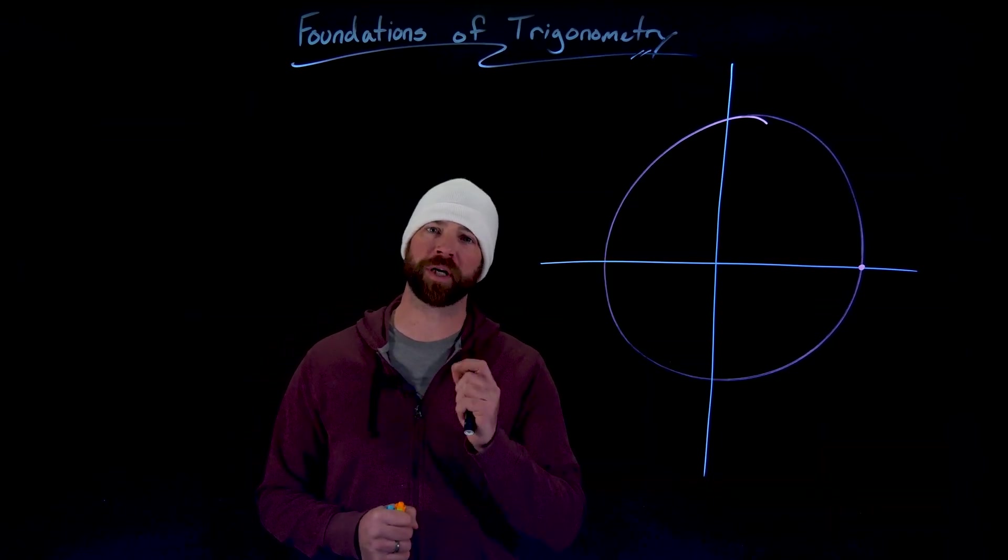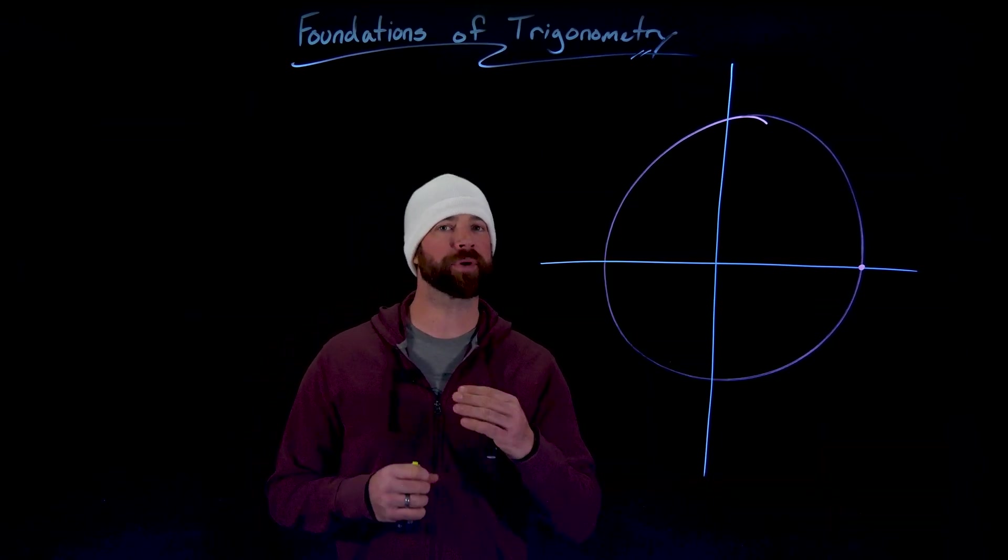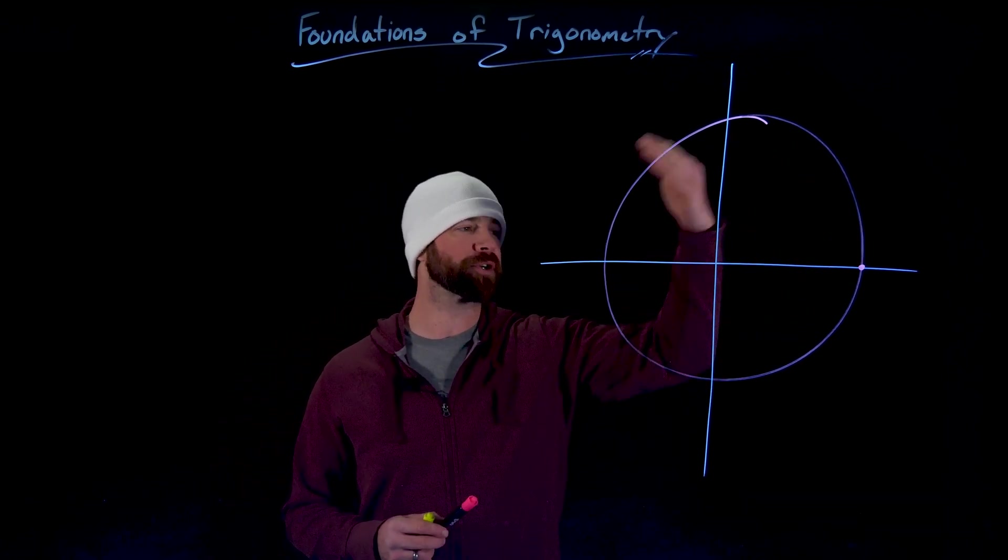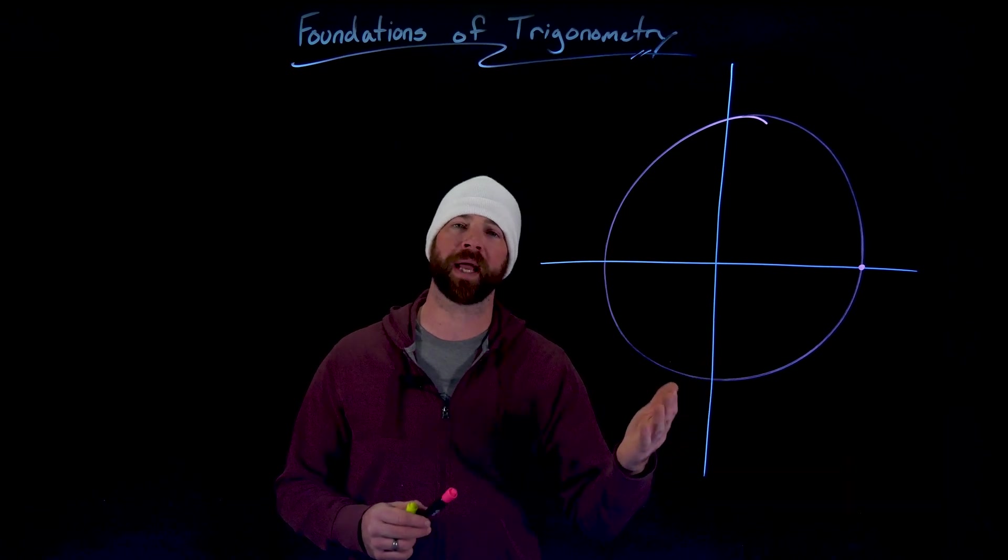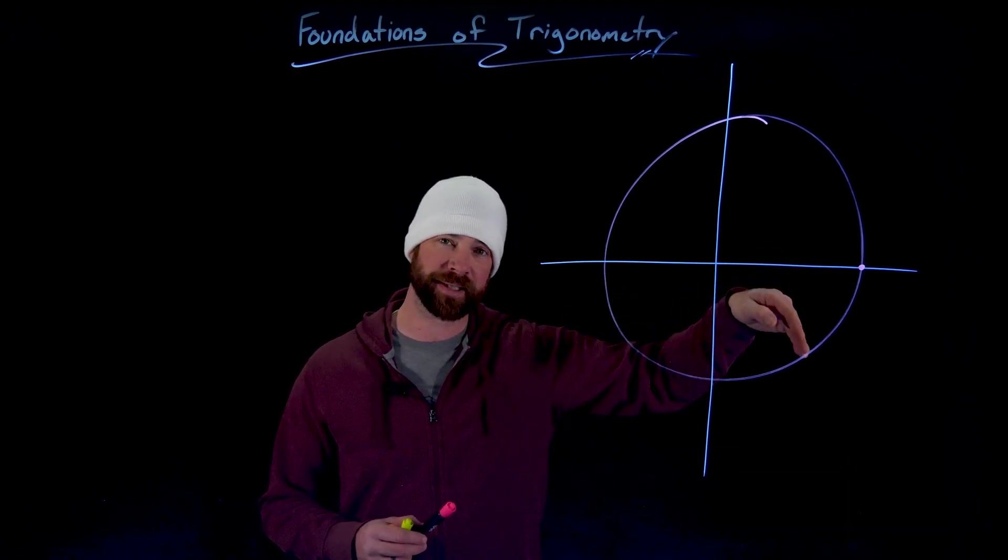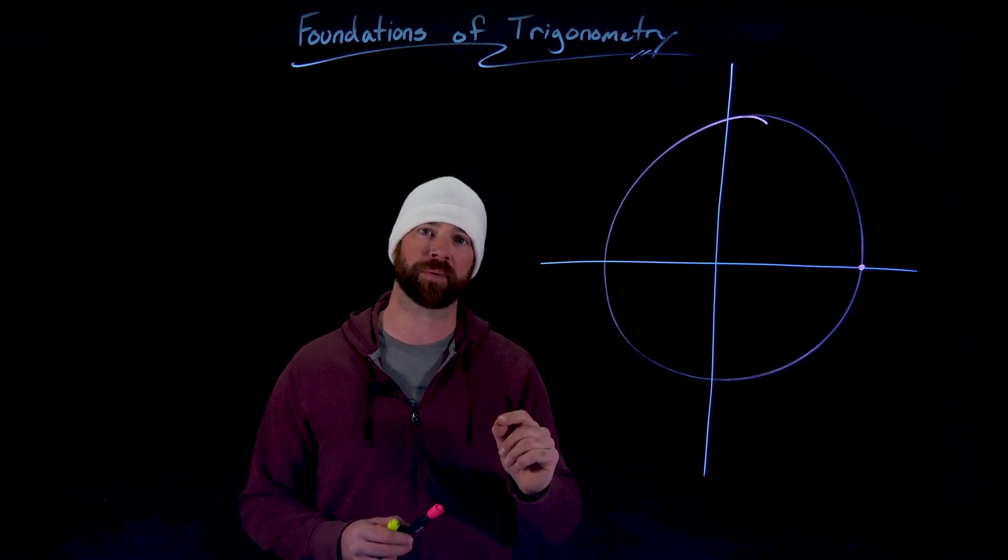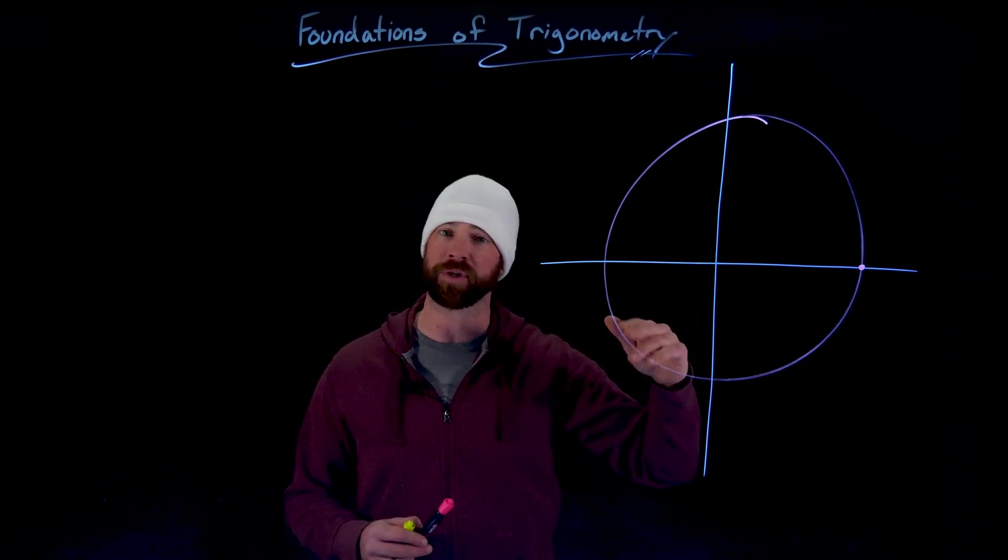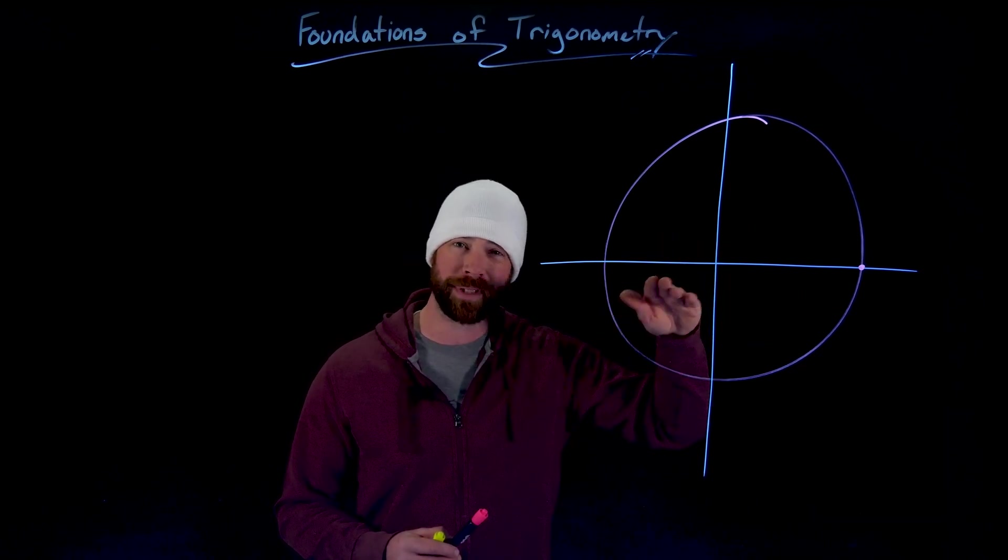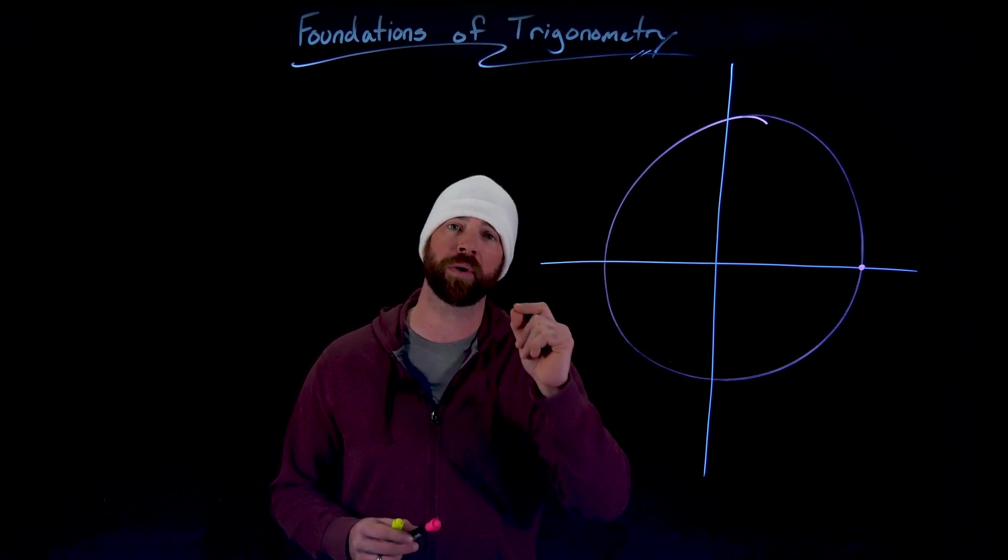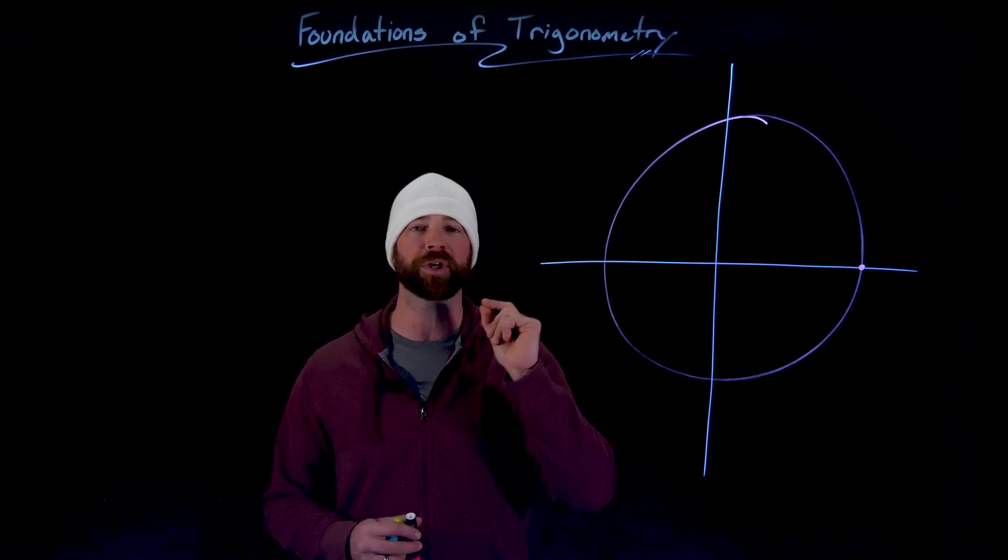Next thing to talk about are coterminal angles. This is a pretty simple concept once you get the basics, but the idea is that as we turn around the circle, if we allow angles that are bigger than 360 or also less than zero negative angles that we'll talk about in one second, many angles end up at exactly the same spot around our circle. They might have gone around a bunch more times, but the ending location is the same, so we call those angles coterminal.